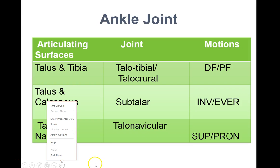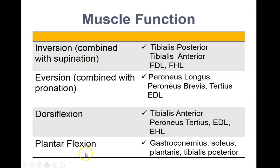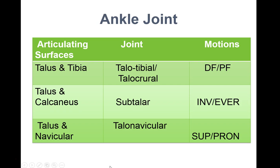This is the ankle foot lecture. Starting with a little anatomy review of the ankle: if you had to pick one bone that's probably the most important in the ankle joint complex, it's probably going to be the talus, mainly because it articulates not only with the tibia, but also with the calcaneus and the navicular.